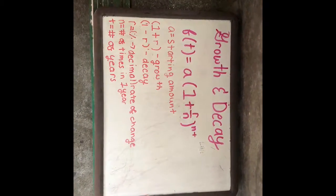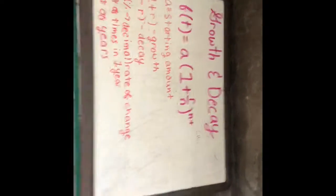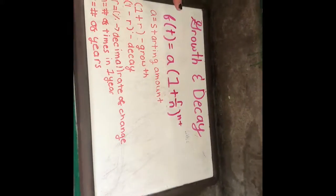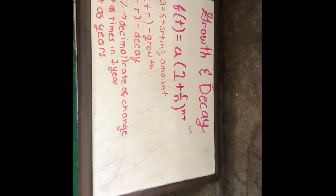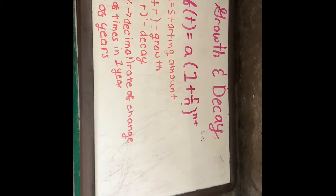So our learning target is 4a growth and decay. The formula is f(t) = a(1 + r/n)^(nt).